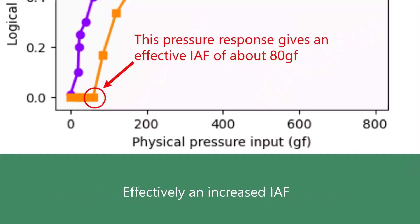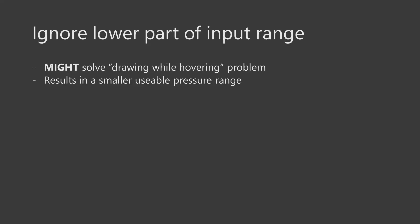Another way of thinking about the effect of this curve on the pressure response is that it has effectively increased the initial activation force — to about 80 gram force, which is incredibly high. You are going to have to press down very hard to make even the smallest stroke. In terms of resource allocation, this pressure curve is deliberately ignoring, or even wasting, some of that pressure resource — the physical pressure range. At first glance this can seem like a bad thing, but sometimes it can be very useful.